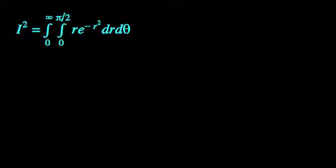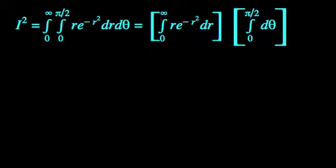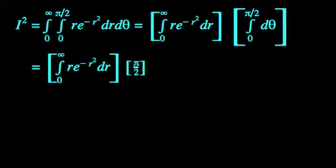Our first step in attacking this thing is to separate the theta and the R components. D theta is a straightforward evaluation over a singular integrand, giving us a value of pi over 2. We can now focus solely on the remaining R component.